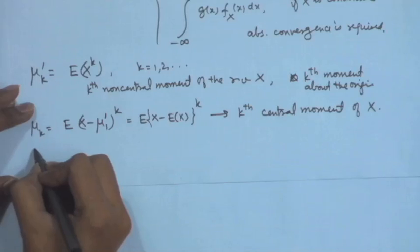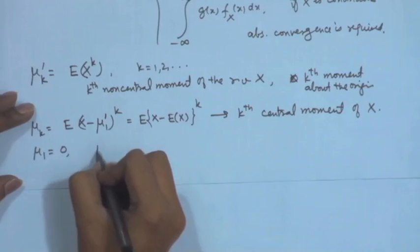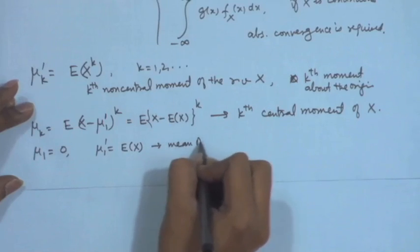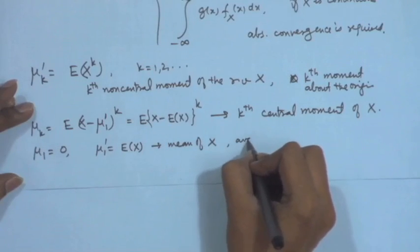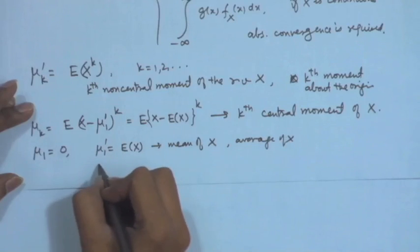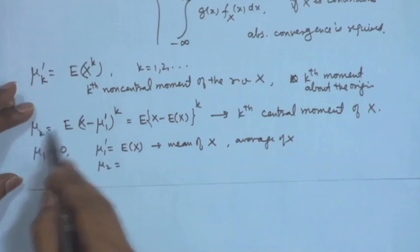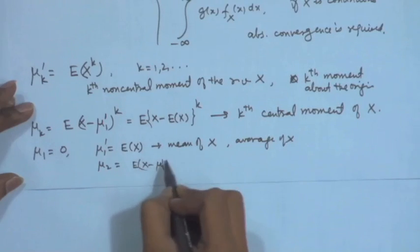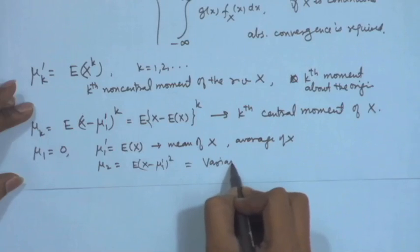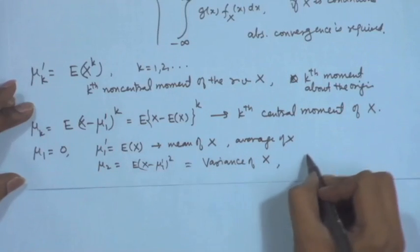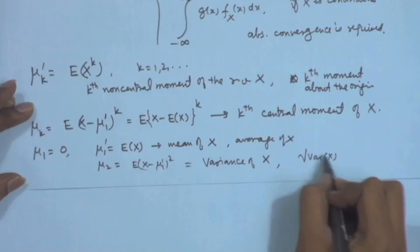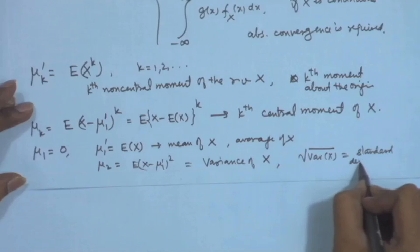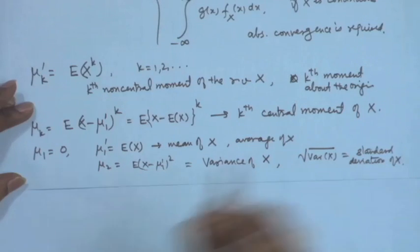Note that μ₁ = 0. μ'₁ = E(X) is called the mean or average of X. μ₂ = E((X − μ'₁)²) is called the variance of X, and the square root of the variance is called the standard deviation of X.